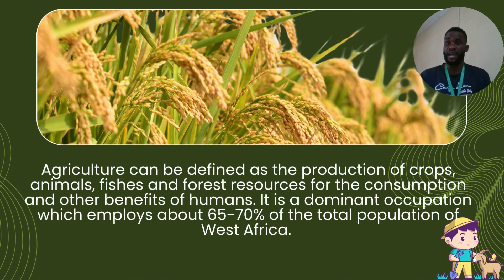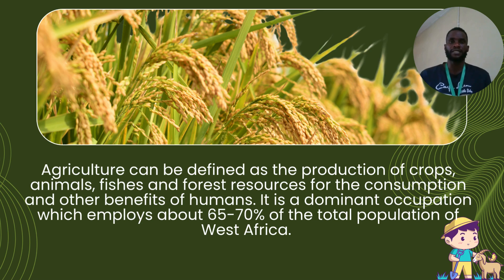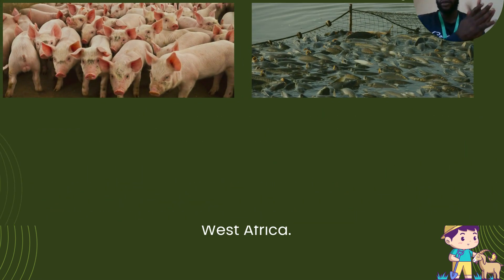What is agriculture? Agriculture can be defined as the production of crops, animals, fishes, and forest resources for consumption and other benefits of humans. It is a dominant sector which employs above 70% of the total population of West African states.